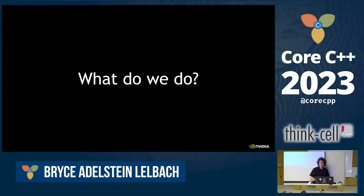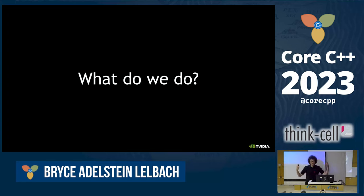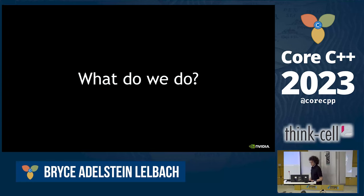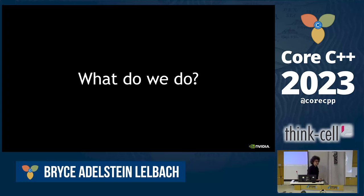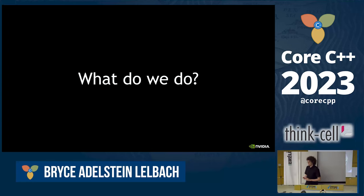We're going to move into an example of what we can do with AI in software engineering. What do software engineers do? We write code. We design things. We read emails. We review code. We test it. We review other people's code. We debug the code.